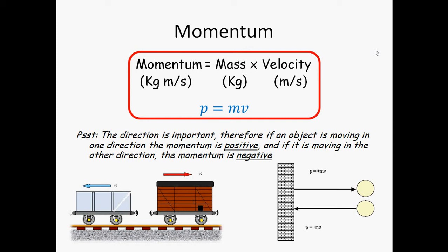Because mass is in kilograms and velocity is in meters per second, momentum will have the units of kilograms meters per second. So P for momentum equals M for mass times V velocity.